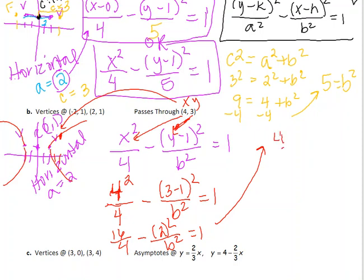4 minus 4 over b squared because 2 squared is 4. 4 over b squared equals 1. And then I subtract 4 from both sides. I end up with negative 4 over b squared equals negative 3.